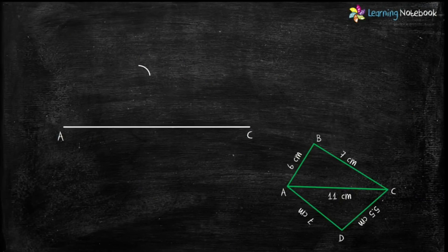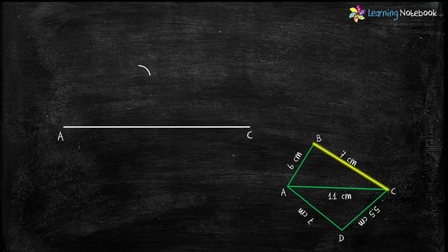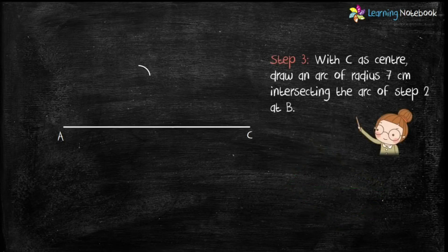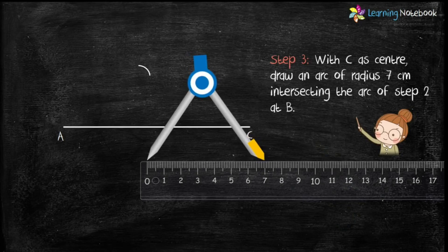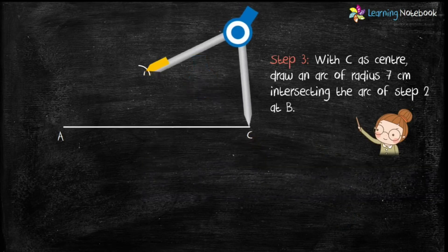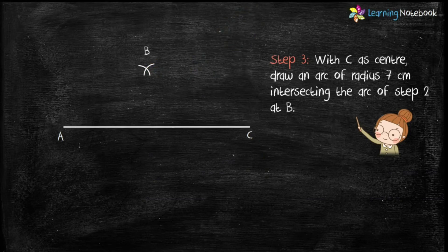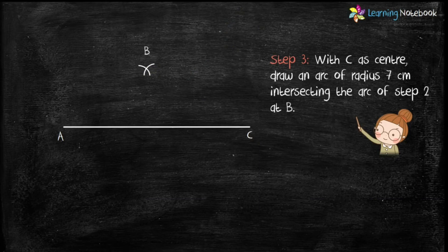Now students, let's construct BC which is given as 7 cm. So, for step 3, open the compass with radius 7 cm and with C as center, draw an arc. This arc will intersect the arc drawn at step 2 at point B.